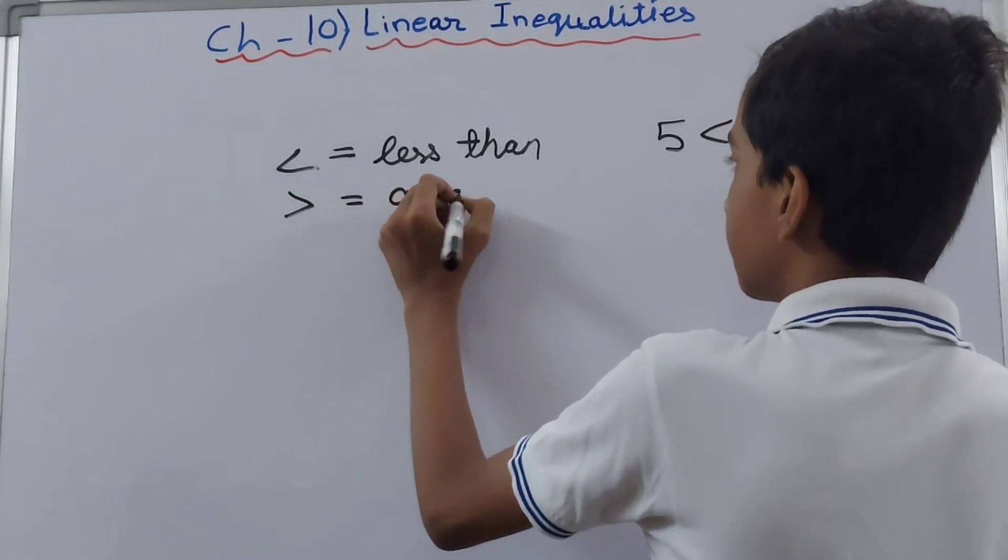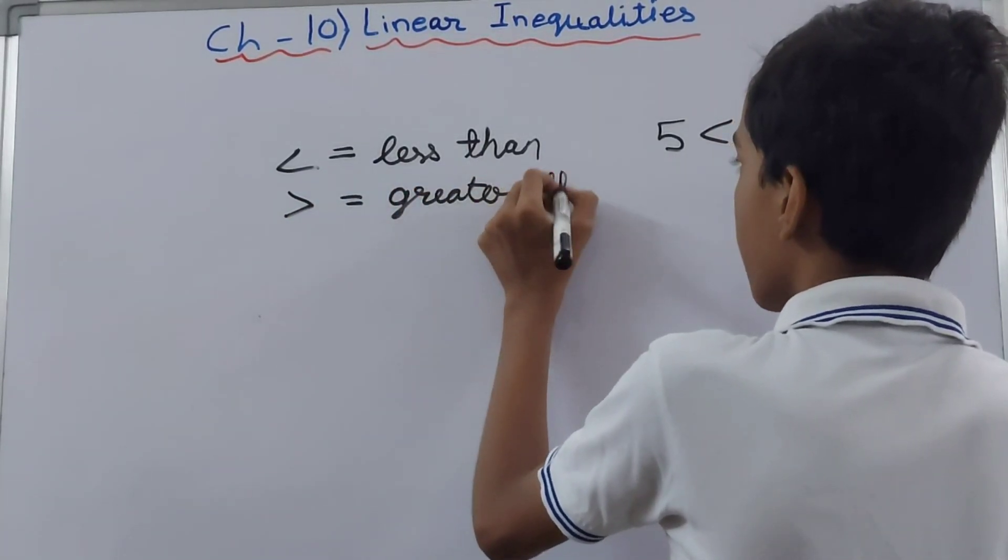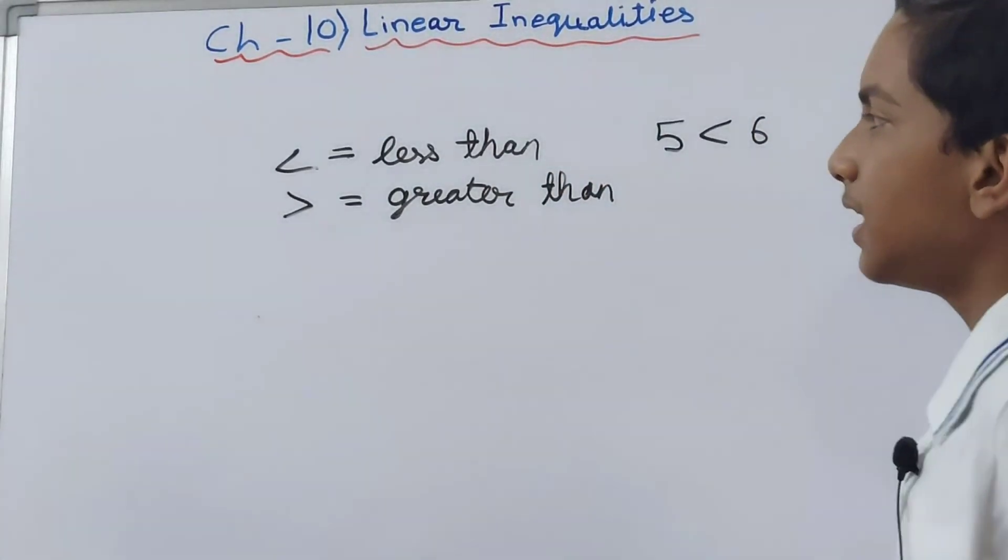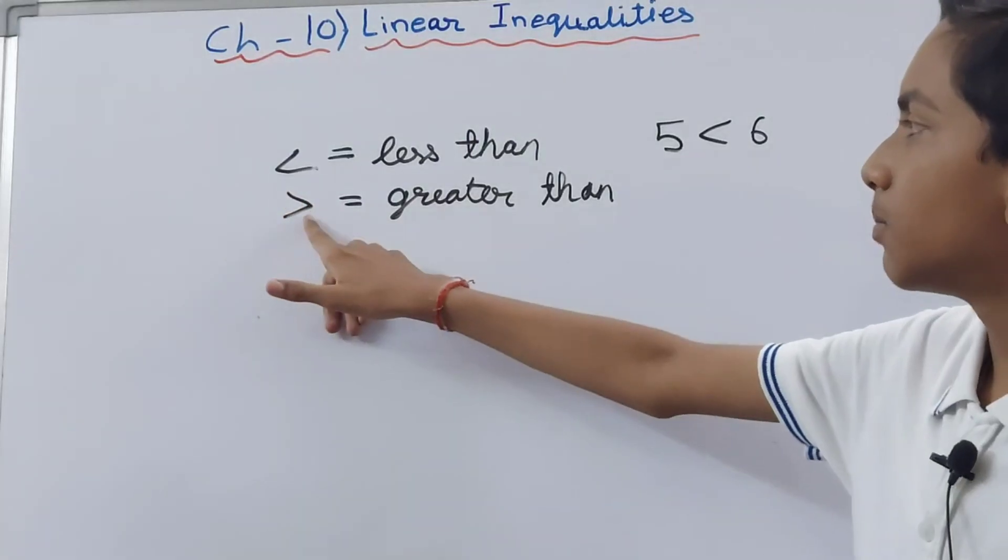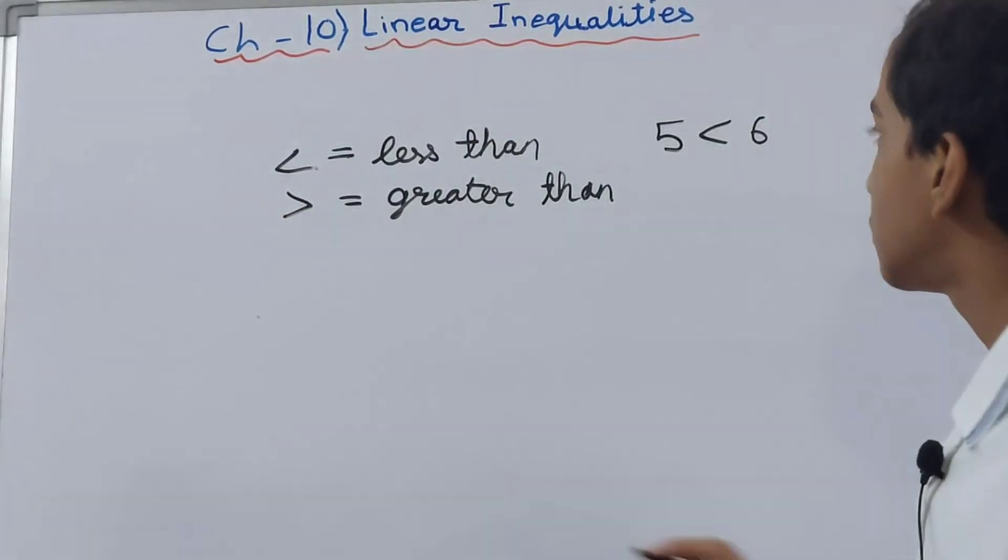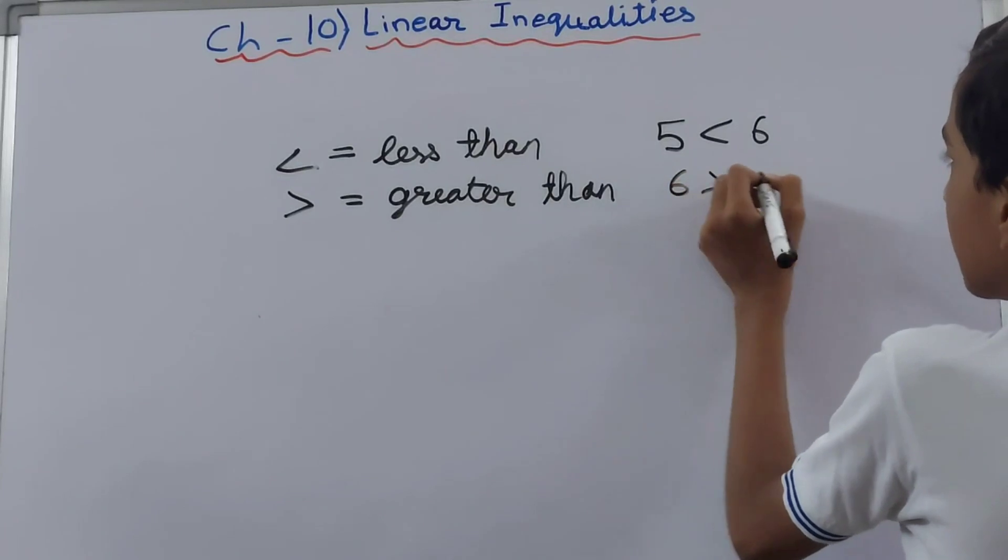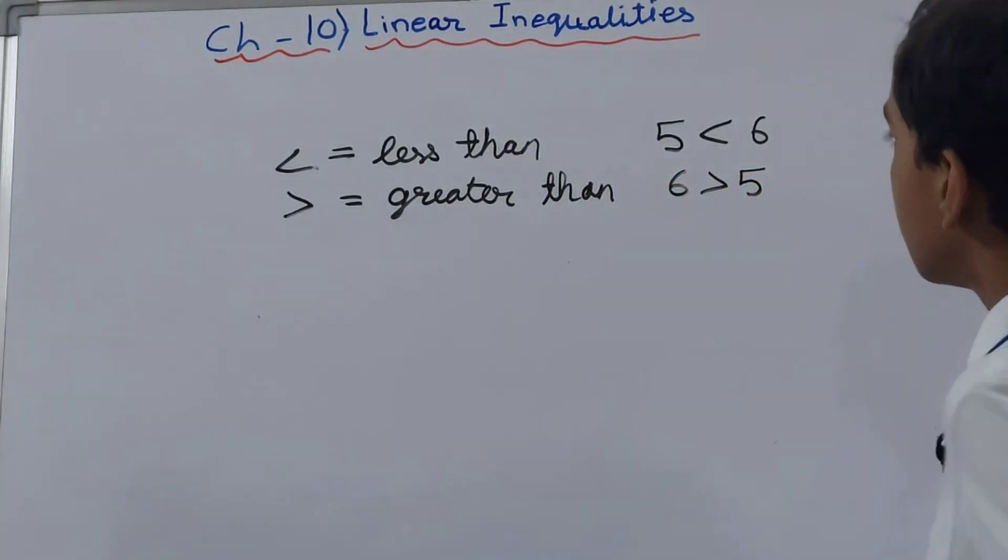Now if you simply reverse this, it becomes greater than. Any number you write towards this open side will be greater than the number towards this closed side. For example, 6 is greater than 5.